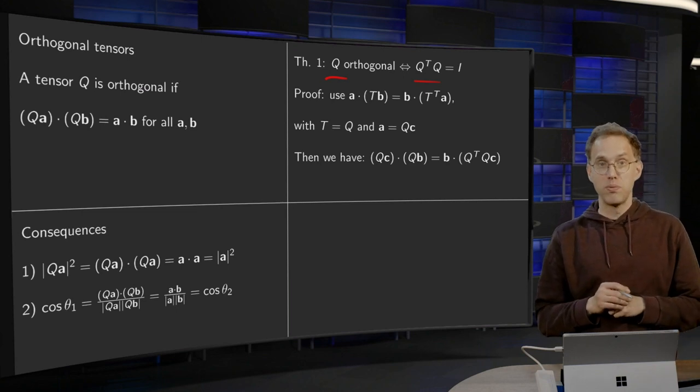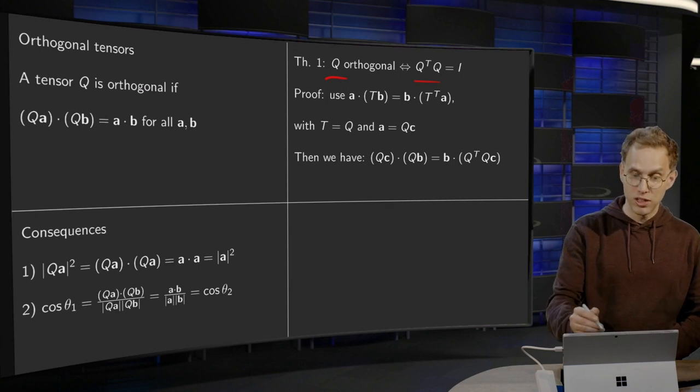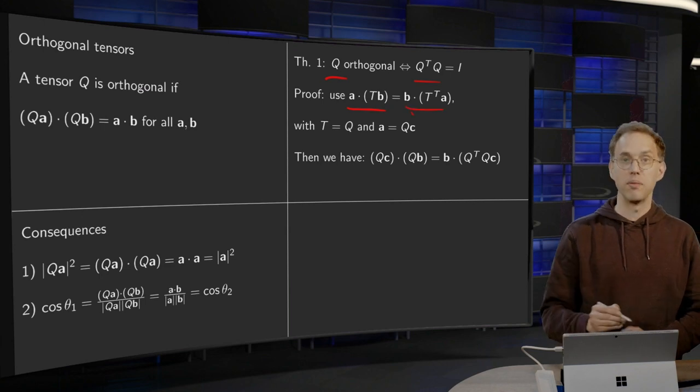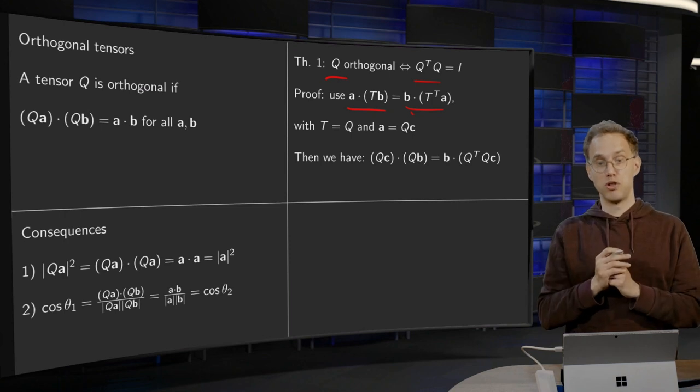How do we prove this? Using tensors, we know the definition of a transpose: a·(Tb) = b·(T^T a). That was the definition of the transpose.